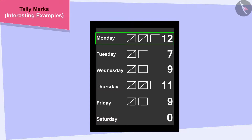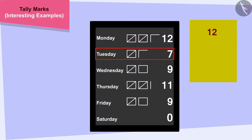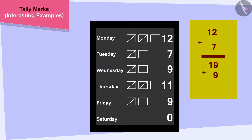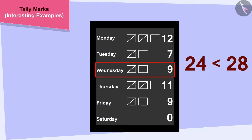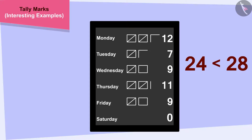12 hours of work was completed by the end of Monday. By the end of Tuesday, 12 plus 7 — 19 hours of work was completed. By the end of Wednesday, 19 plus 9 — 28 hours of work was completed. Since 28 is more than 24, by the end of Wednesday more than half of the total hours of work had been completed. This means the day Raju is talking about is Wednesday.